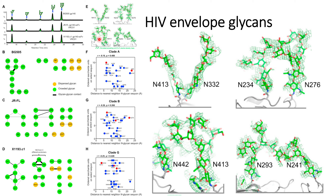This substantiates their point that the HIV envelope is glycosylated — it has glycans on it in all three different variants, across all three different parts of these envelope proteins.